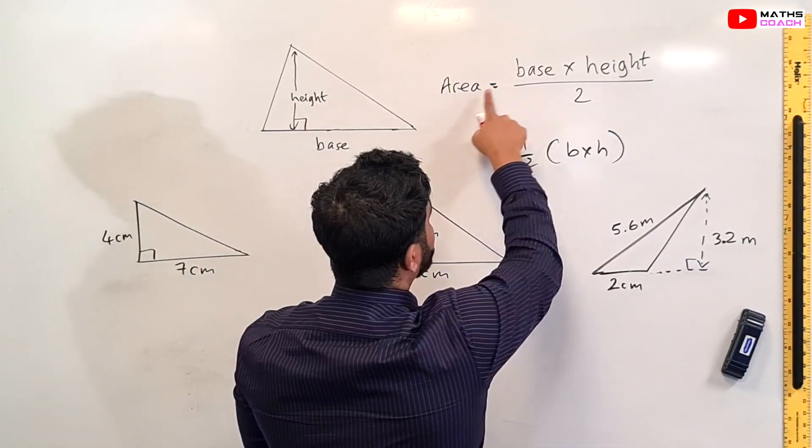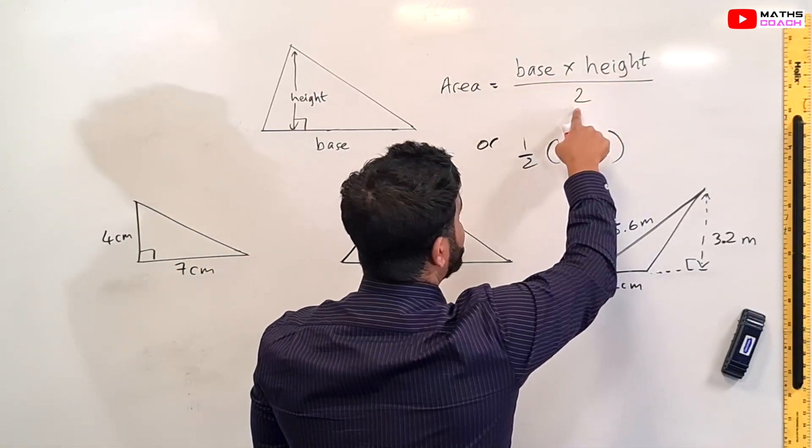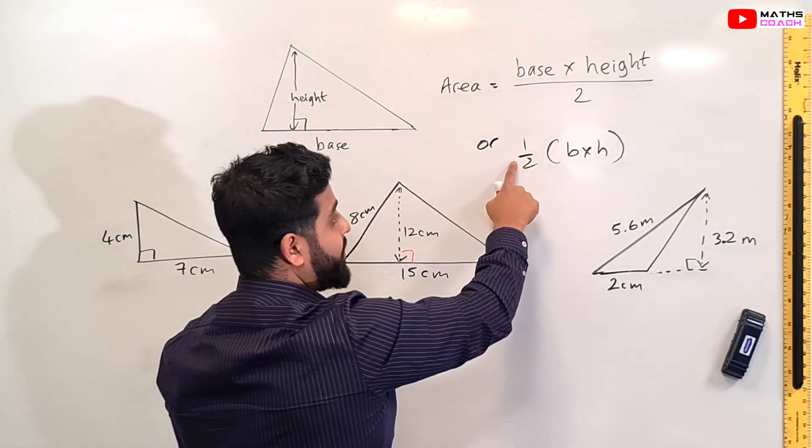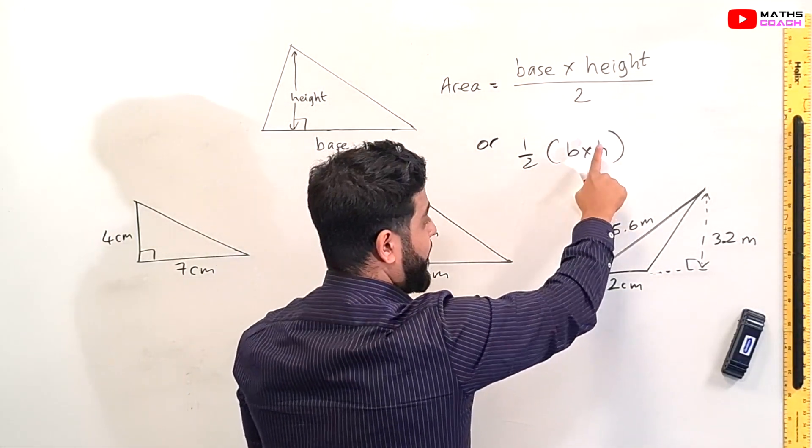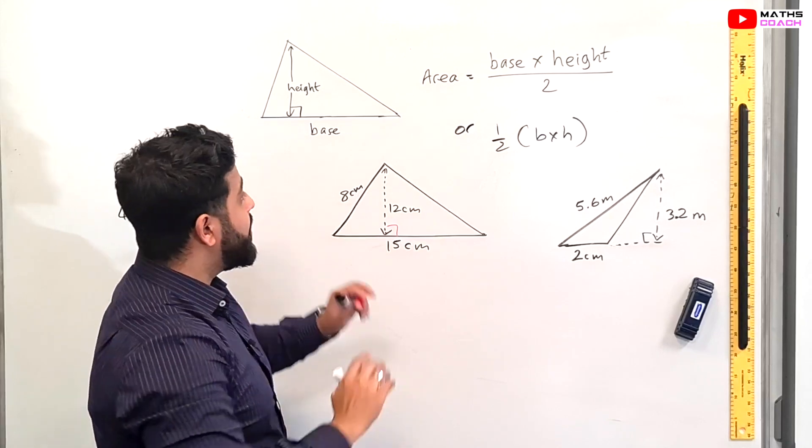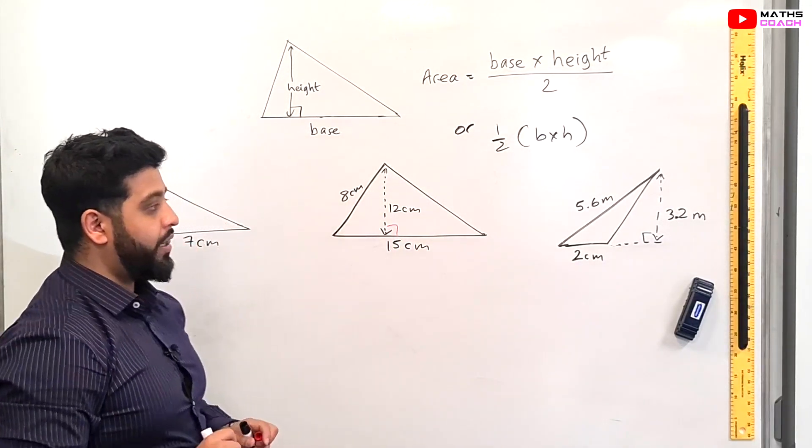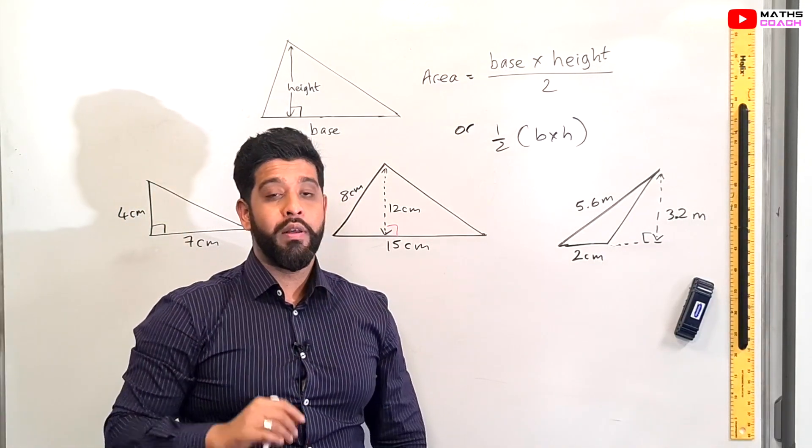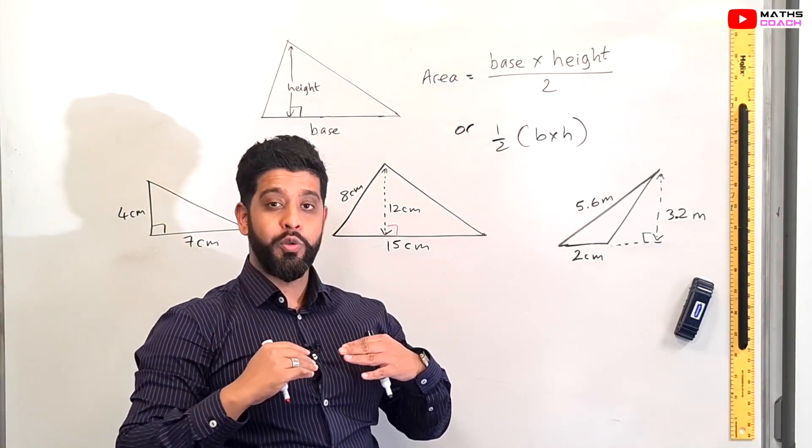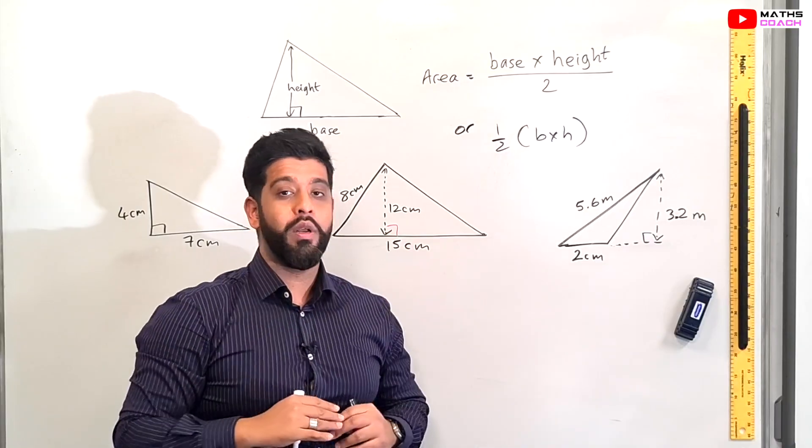The area of a triangle is base times the height divided by 2 which can also be written half base times height in a side bracket. So get this down make a note of this and then we'll answer our three questions. And then I have a couple more that will take this to a sort of set 1, set 2 standard.